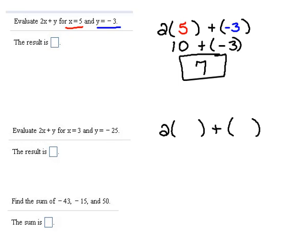In the next problem, we're going to do actually the same thing, because we have 2x plus y again. So this time, instead of x, they told us to use 3, and instead of y, they told us to use negative 25.